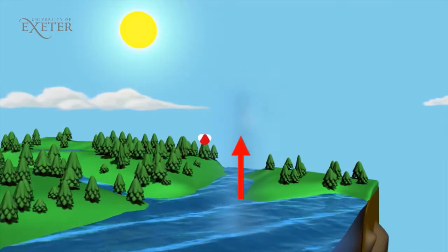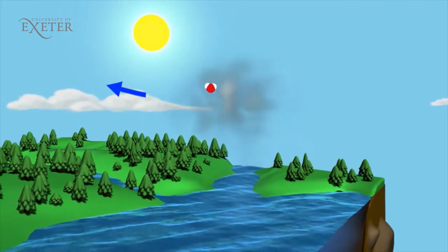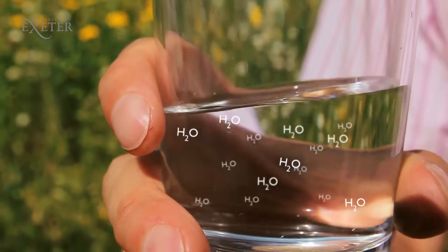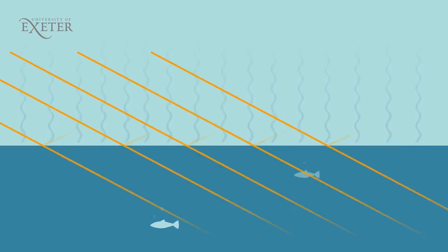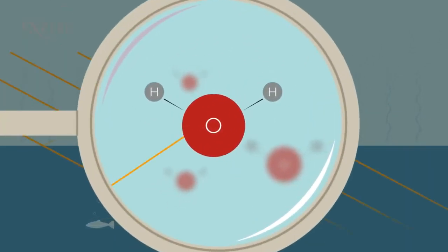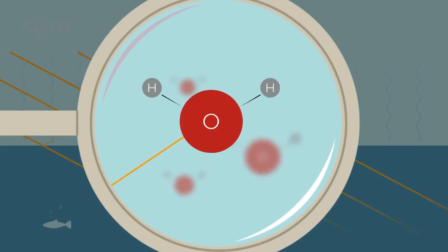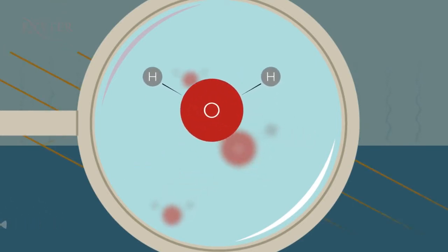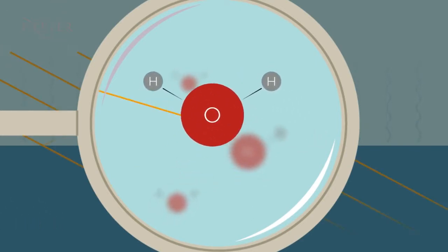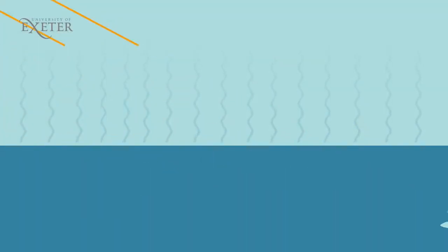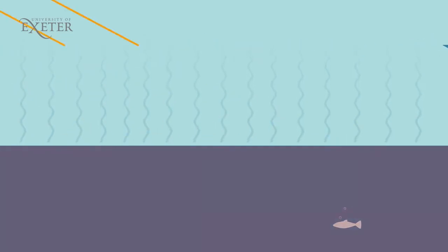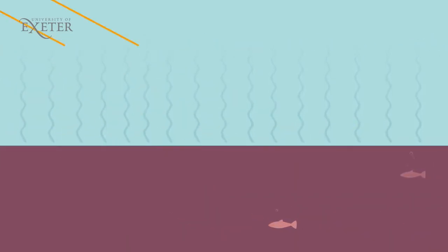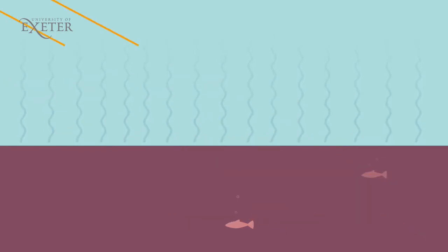Evaporation occurs when solar radiation heats the surface of bodies of water. Water, when it's evaporated, is transformed from the liquid to the gas phase and stored in the atmosphere. The molecules of water vapour in the atmosphere absorb heat radiation coming from the Earth below, causing them to vibrate. Then they re-emit heat radiation, some of which comes back down to the surface, resulting in further warming. This increased warming, in turn, increases the amount of evaporation in an amplifying process, which we call a positive feedback.